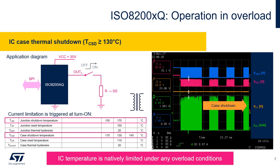In case the overload condition lasts for a longer time, the IC substrate temperature keeps rising and the second level of protection may be activated. This is called case thermal protection and it is triggered when the temperature of the whole IC reaches approximately 130 degrees Celsius. At this point, all overloaded channels are instantly disabled until the IC temperature decreases sufficiently.